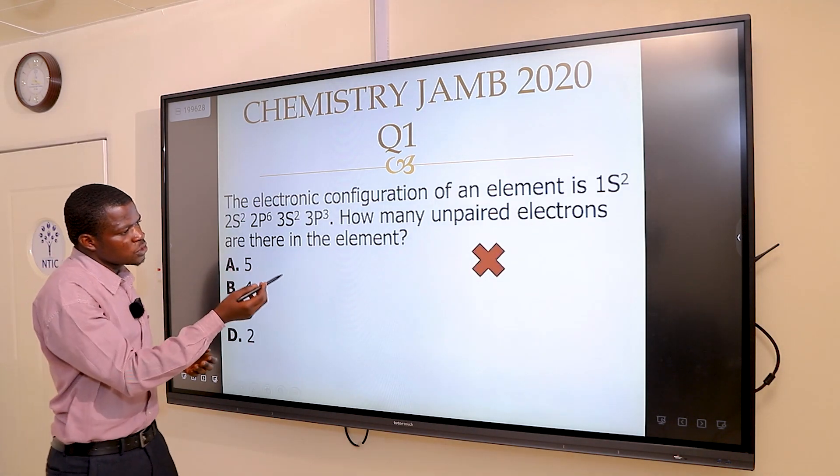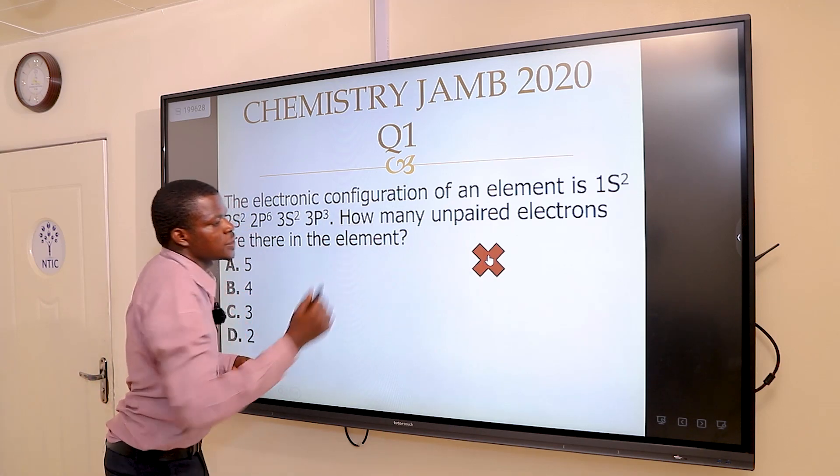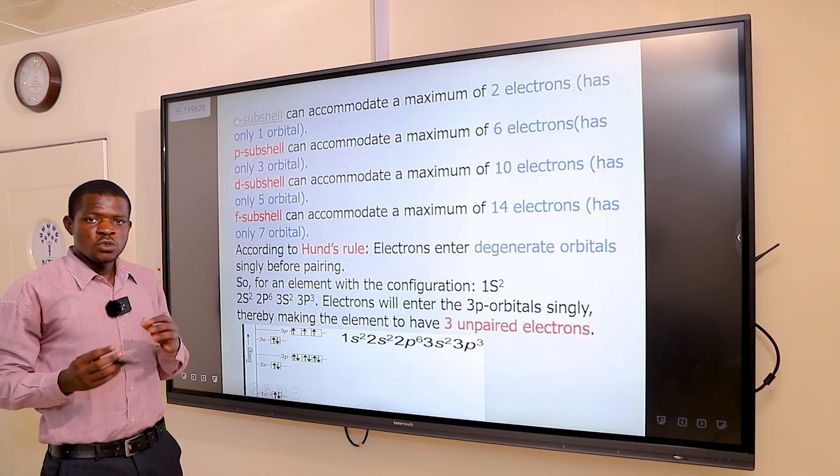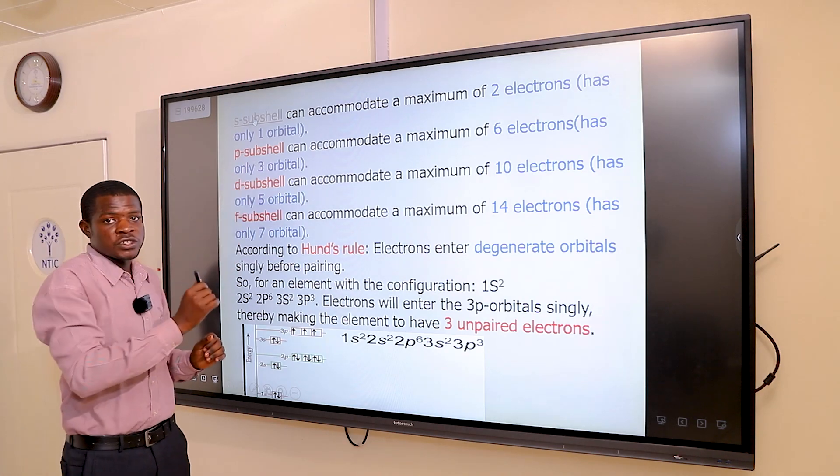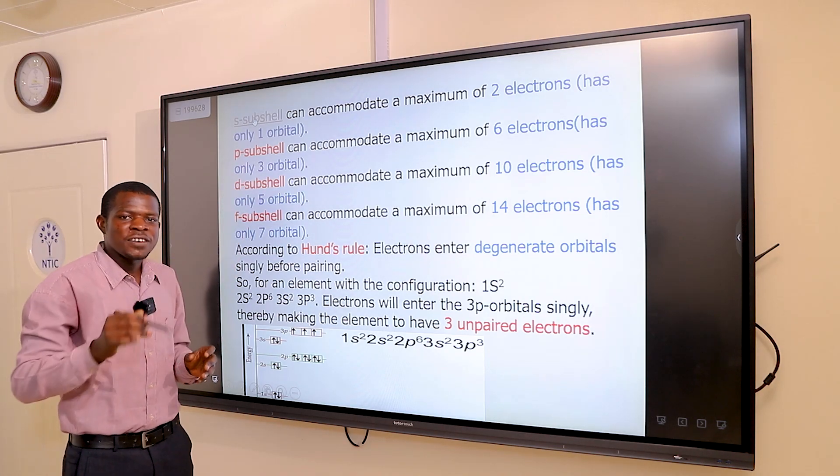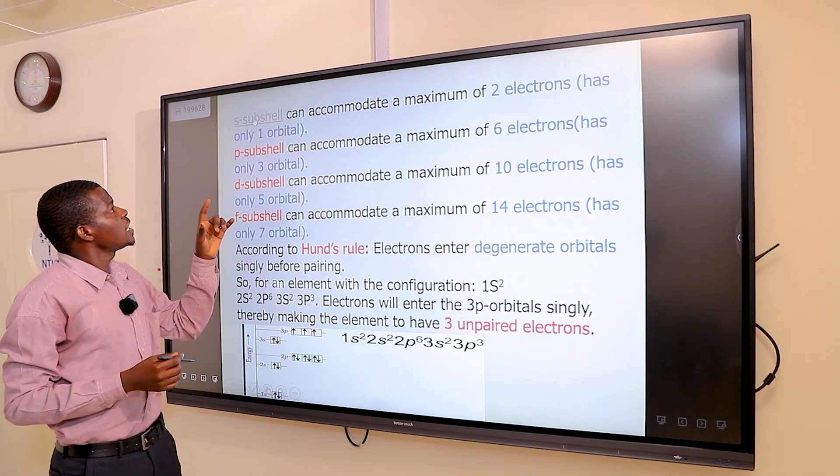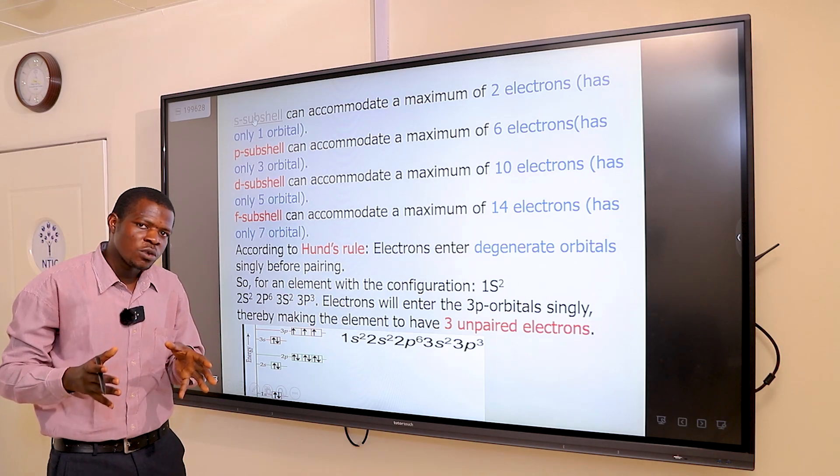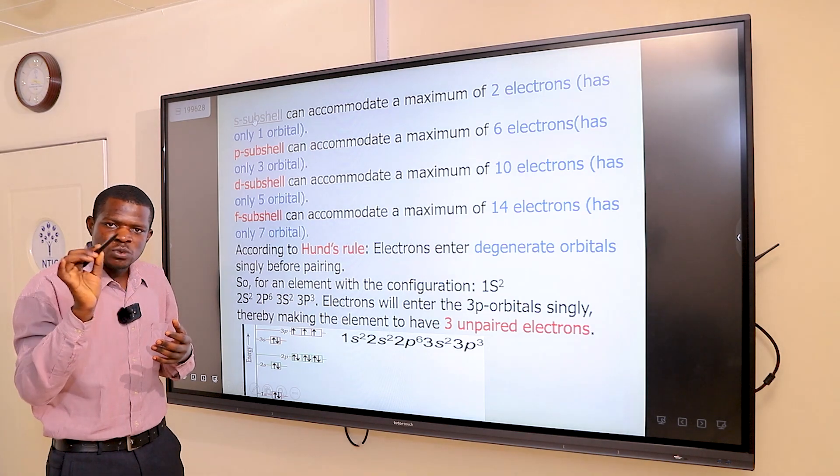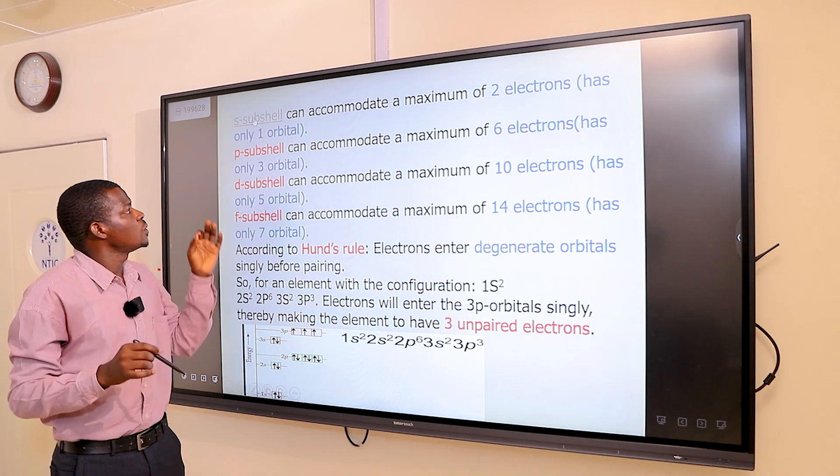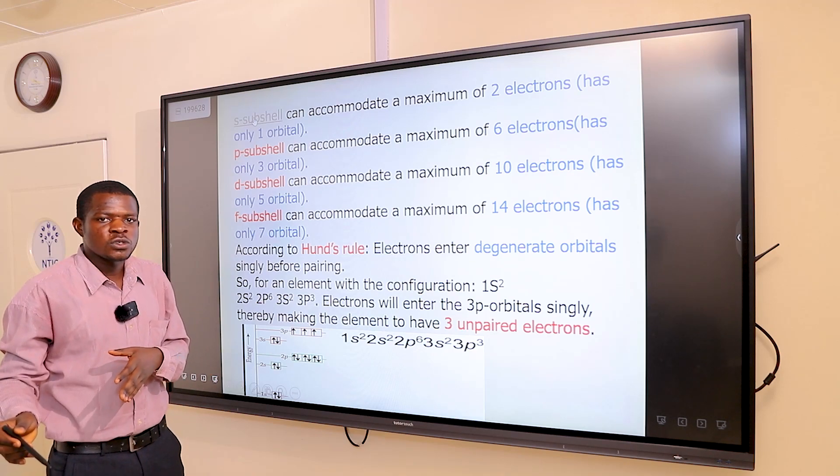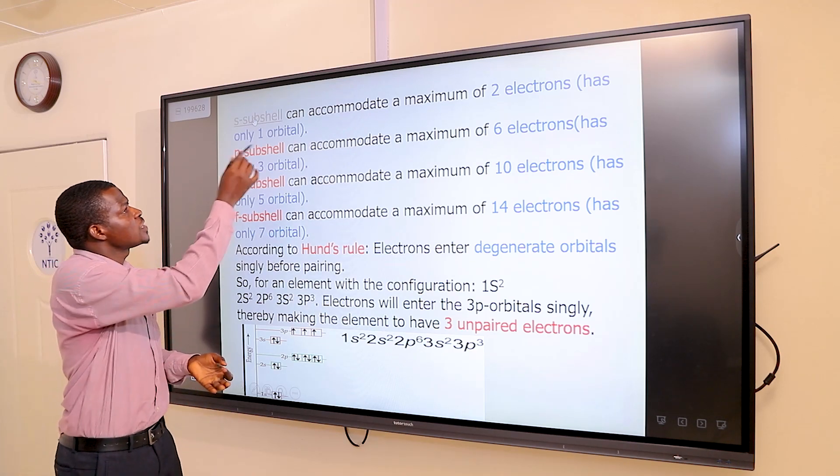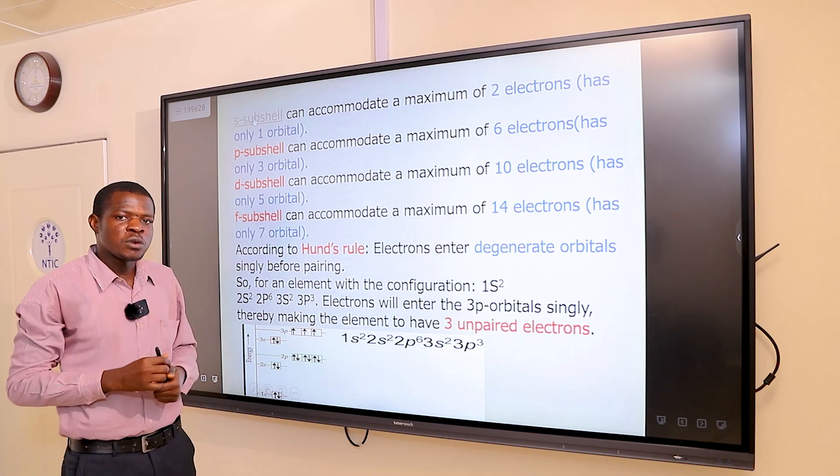The first option is wrong. You have to remember that we have four types of subshells: the S subshell, the P subshell, the D subshell, and the F subshell. The S subshell has only one orbital. We represent orbitals with boxes. Each box or orbital can take a maximum of two electrons.